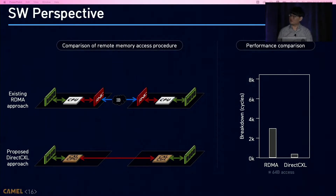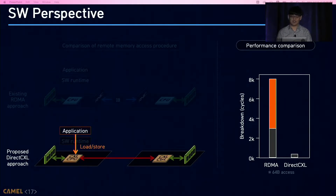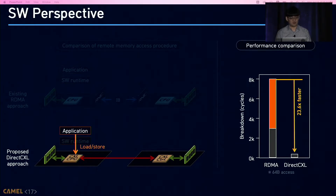From the software viewpoint, RDMA requires additional software intervention. When an application calls an RDMA function, user-level RDMA libraries must be involved to control the RNIC. In contrast, CXL introduces no software overhead since it accesses remote memory using load/store instructions. As a result, the performance benefit increases to about 24 times.